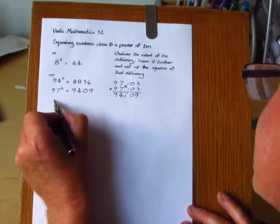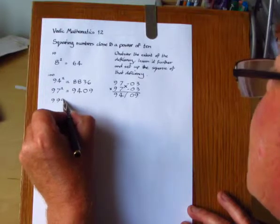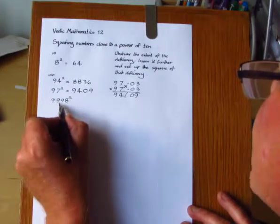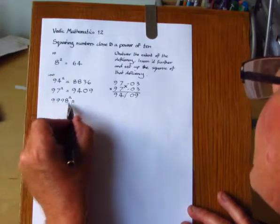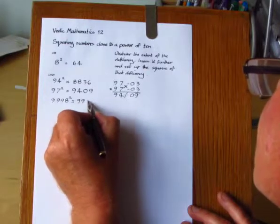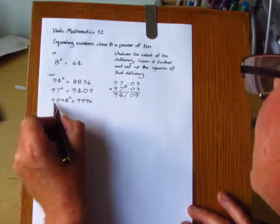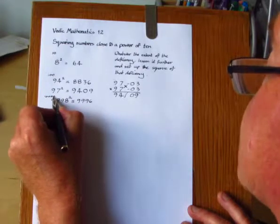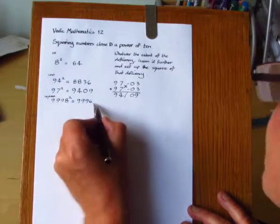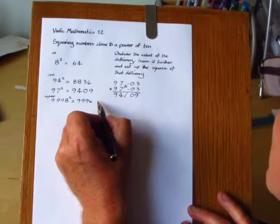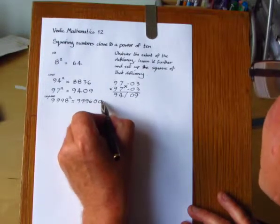And this can be extended to any power of 10. Let's say we've got 9998 squared. The deficiency is 2. So we decrease it further: 9996. And the base has 4 zeros in it, it's 10,000. So we need 4 digits over on the right. And we square the deficiency, giving 4. So it's 0004.